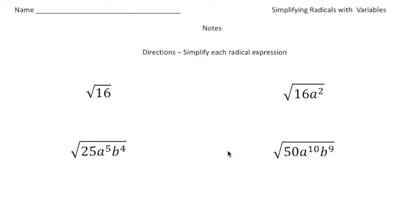So first take a look at the square root of 16. This is a perfect square, so the square root of 16 is just going to be 4. Let me break this down even more, because what I'm going to do here you have to do over here as well.